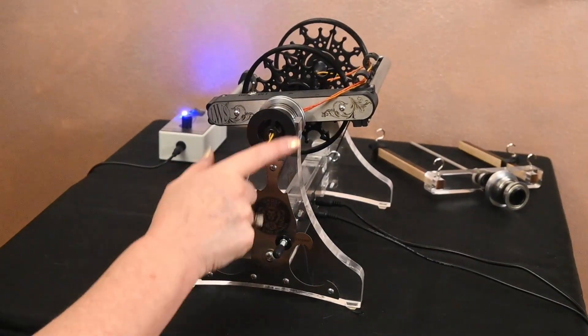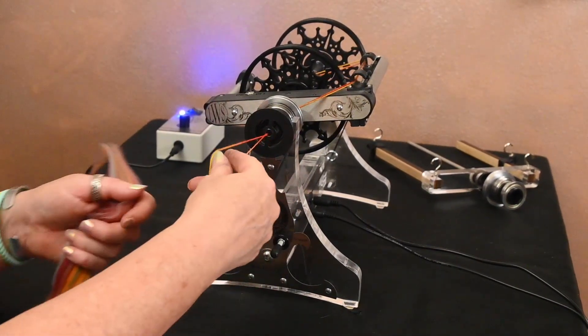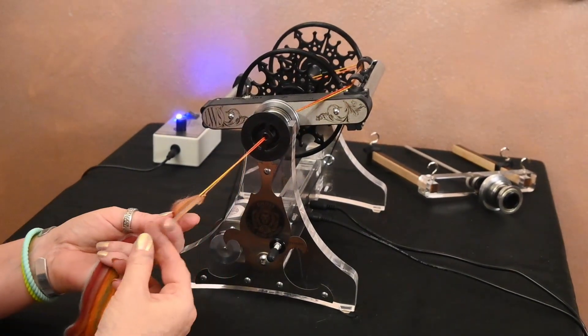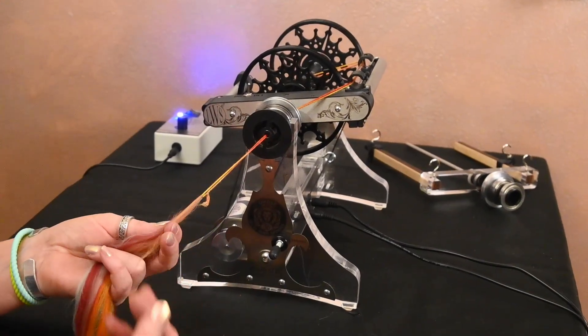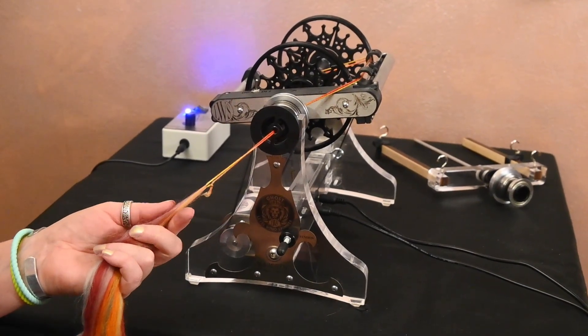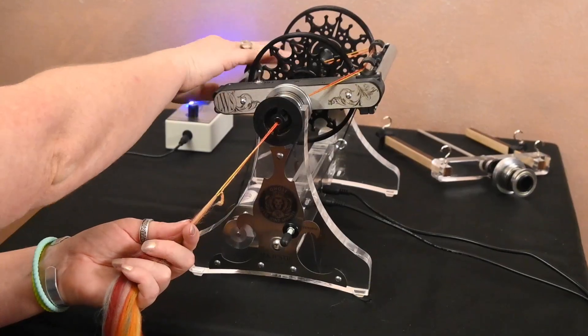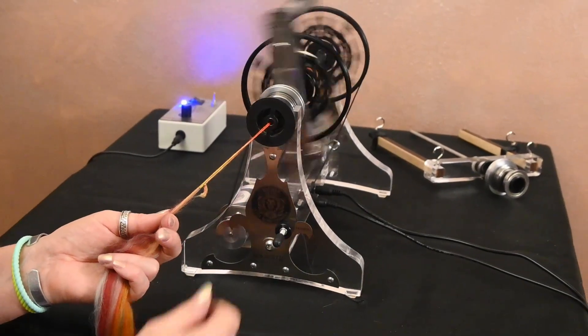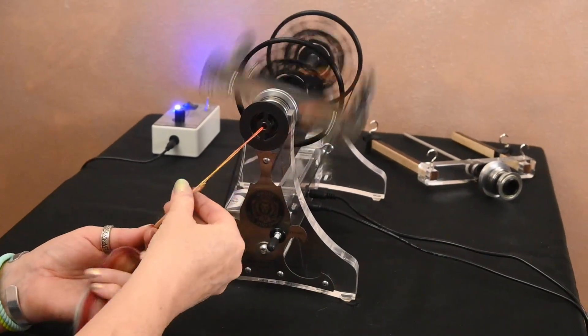I do have the orifice reducer on. I'm going to get the leader started. There's lots of different ways to do this. Usually I just fold a little bit of the fiber over first and I'm going to build up a little bit of my bobbin before I turn my auto winder on.